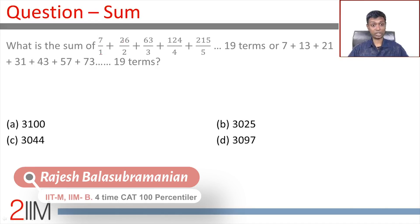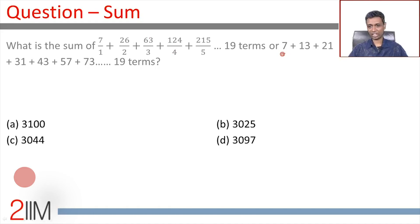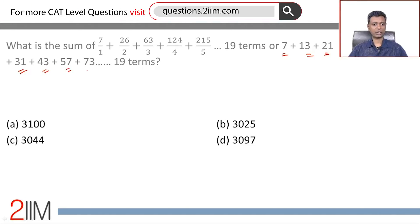What is the sum of 7/1 plus 26/2 plus 63/3 plus 124/4 and so on, writing 7 plus 13 plus 21 plus 31 plus 43 plus 57 plus 73, 19 terms?